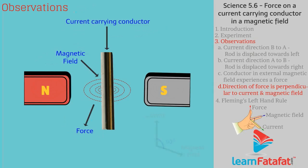When the direction of current is at right angle to direction of magnetic field, then force acting on conductor is maximum and is in the direction perpendicular to current as well as magnetic field.